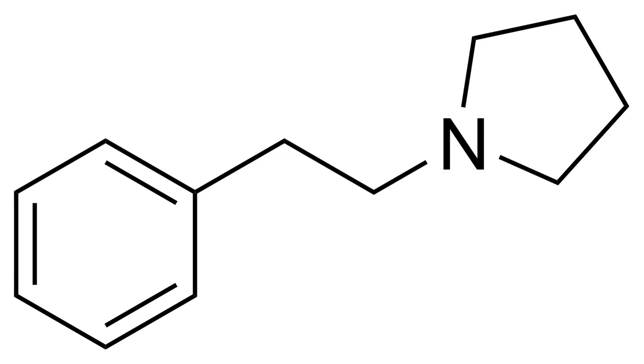1,2-phenolethyl is a chemical compound. It is an analog of 2-phenolethylamine where the amine has been replaced by a pyrrolidine ring.